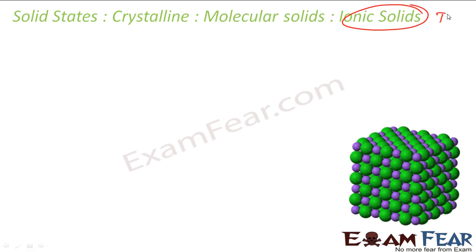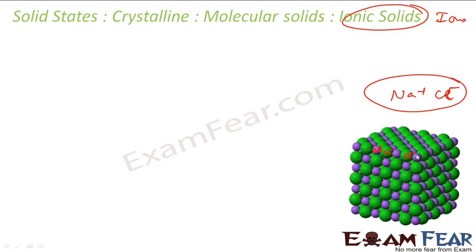A good example is NaCl — Na⁺ and Cl⁻ ions. Here, Na⁺ is shown in one color and Cl⁻ in green. These solids are composed of positively charged ions and negatively charged ions. Since they are real charges, they are held by a strong Coulombic electrostatic force of attraction.